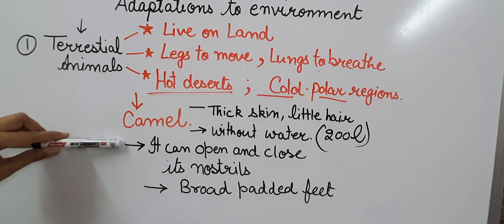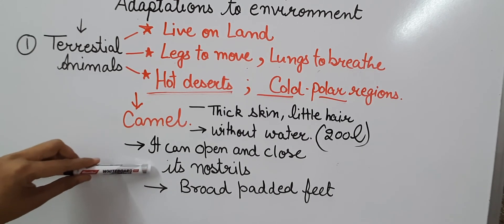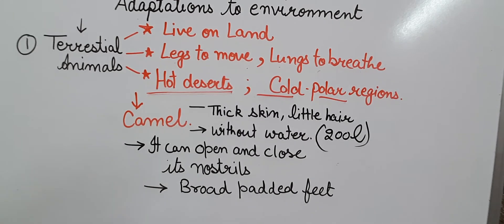Another feature which is very important during the storms in the desert is, it can open and close its nostrils. This feature helps it to keep the sand out of its body during the sandstorm, because sandstorms are very frequent in the desert area and it can easily close its nostrils. Nostrils are basically the openings of our nose.